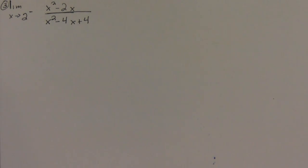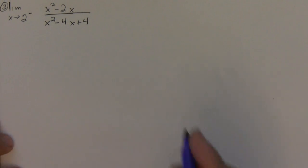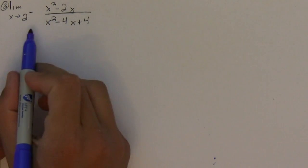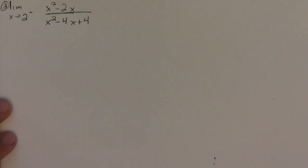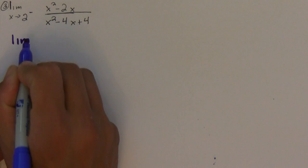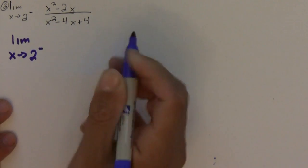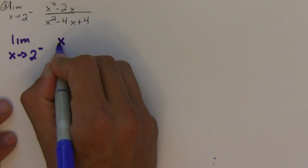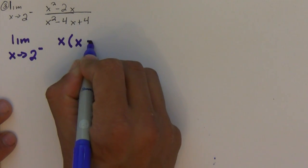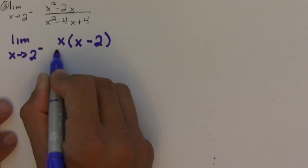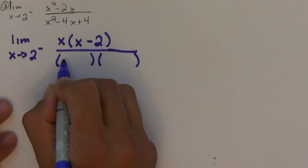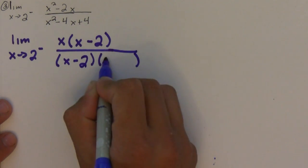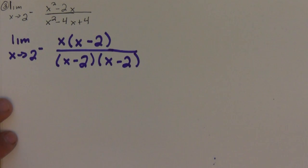In this problem we're trying to find the infinite limit. The first thing we want to do is factor everything out. So let me rewrite it: the limit as x approaches 2 from the left. On top I can factor out an x and I would have x minus 2 left over. On the bottom, this factors into x minus 2 and x minus 2.